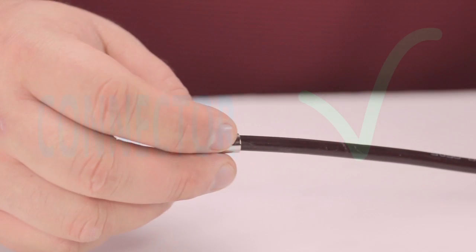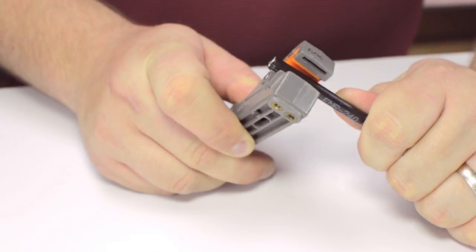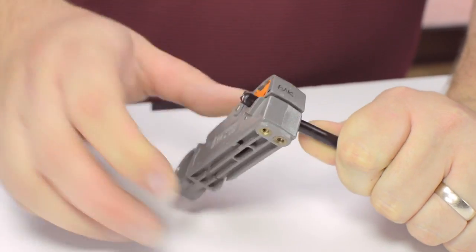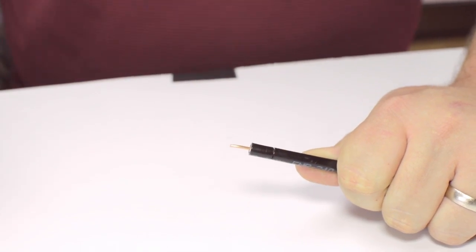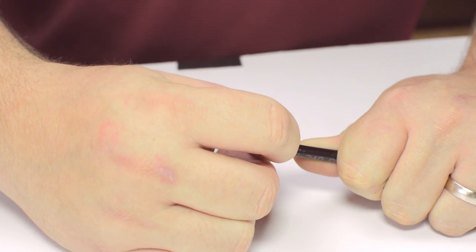Start by inserting the ferrule over the outer jacket of the cable. Then using your cable stripper, strip back the outer jacket and dielectric. The advantage of using a cable stripper is that it will strip back the jacket and dielectric at the same time.